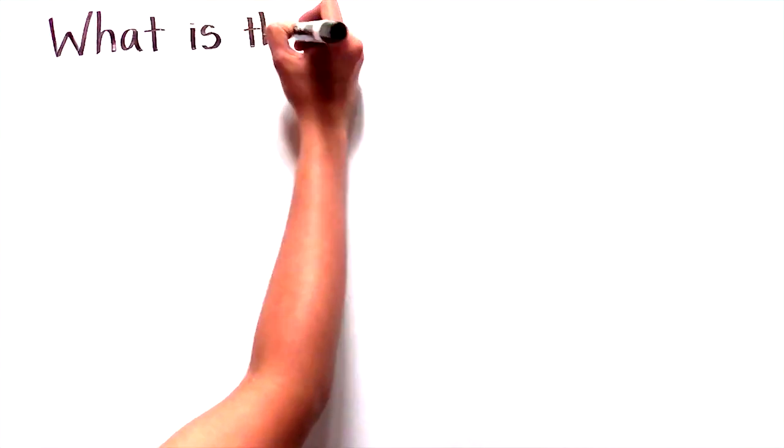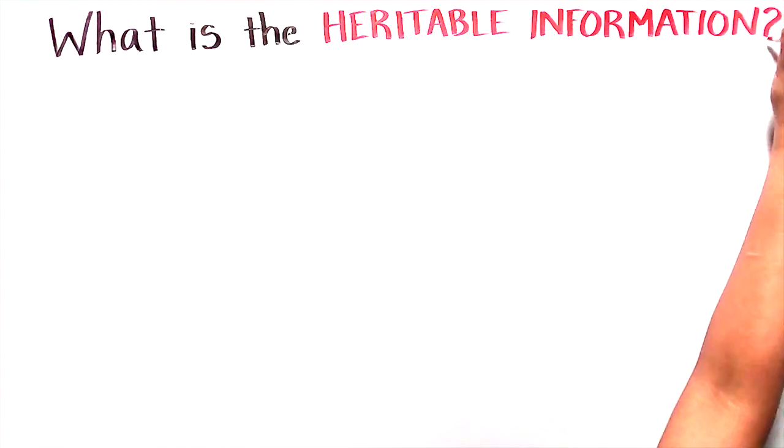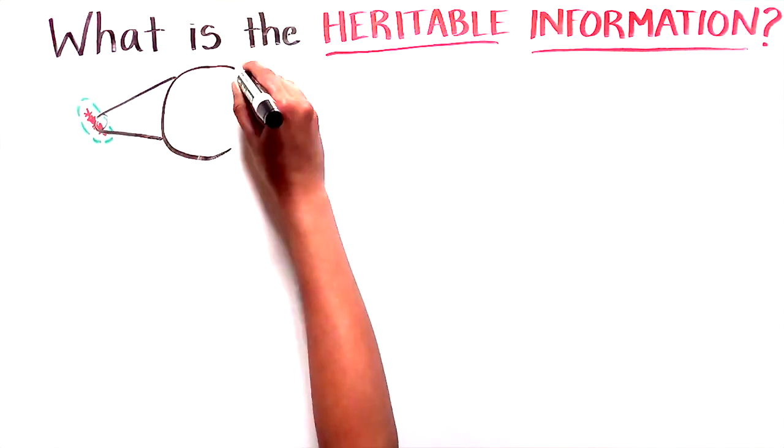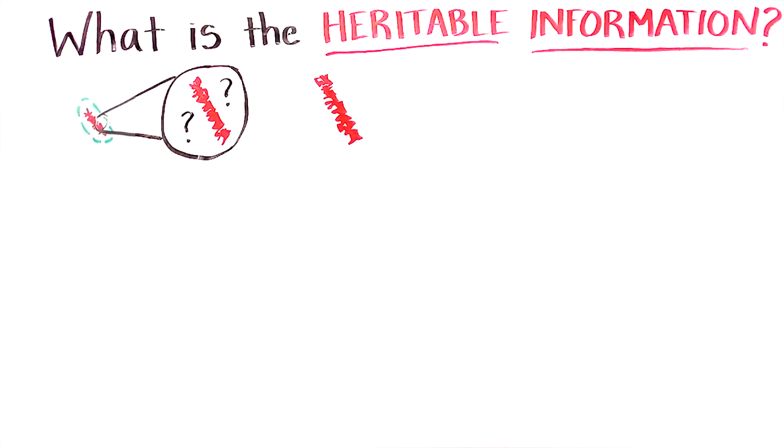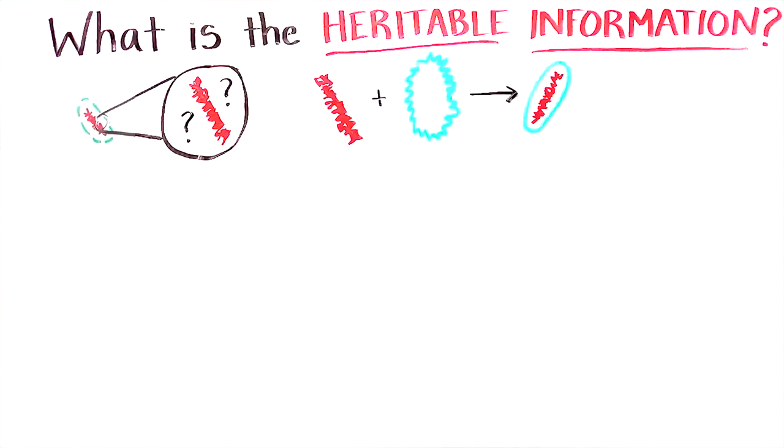This exciting finding left a big puzzle that Avery, McLeod, and McCarty wanted to solve. What was the heritable information that caused the transformation of the rough strain into the deadly smooth bacteria? The scientists purified a chemical substance from the smooth bacteria and they repeated Griffith's results with it. When they applied the substance to the rough bacteria, those rough bacteria transformed into smooth bacteria. And this trait was heritable and permanent.